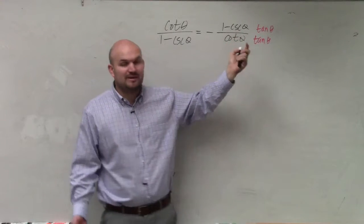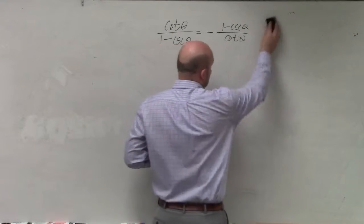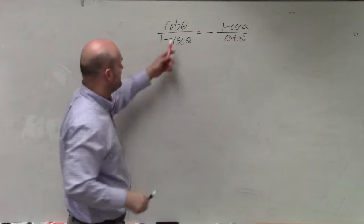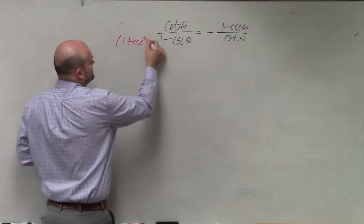Now, you could think about multiplying by the conjugate, which is another way. But I'm just going to say, you know what? I know that what would happen then if I multiply by the conjugate over here. So I'd multiply by one plus cosecant squared of theta.